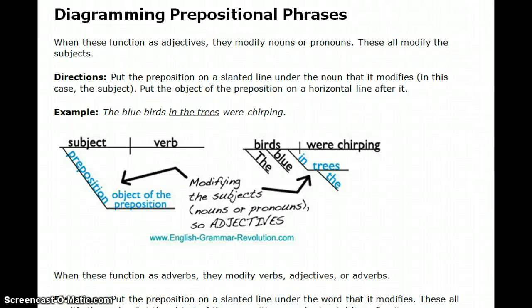Welcome to the next video on sentence diagramming. This one's going to pick up where we left off. In the last two videos, we learned about modifiers and how they add details to sentences. We said modifiers are either adjectives, answering one of the four adjectival questions, or they're going to be adverbs, answering one of the four adverbial questions.